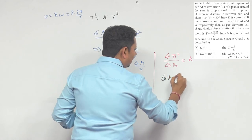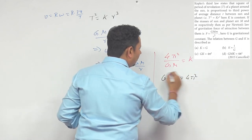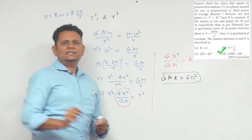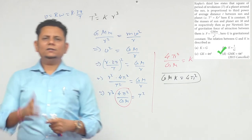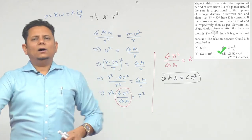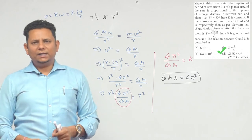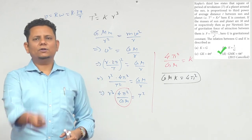So GM × K will be equal to 4π². Ye apna necessary required relation hai jo apne ko is sawal mein chahiye. Hence we can say option number D will be the right answer for this particular problem.